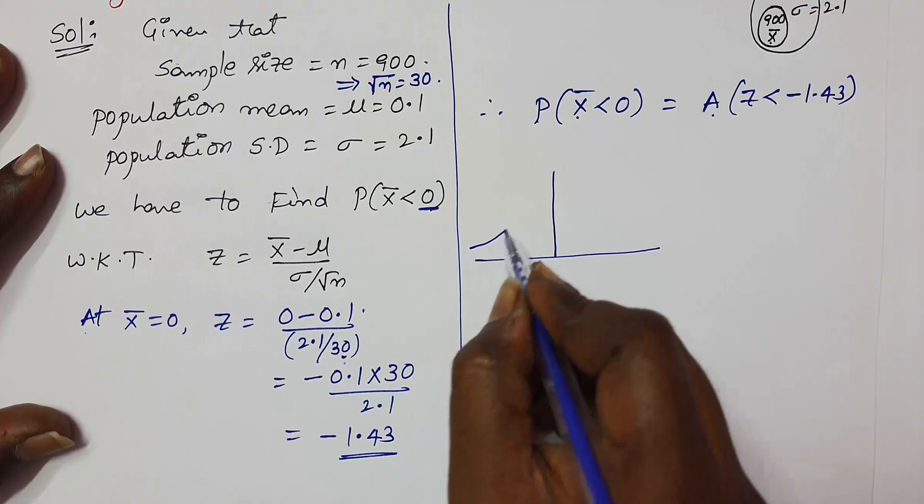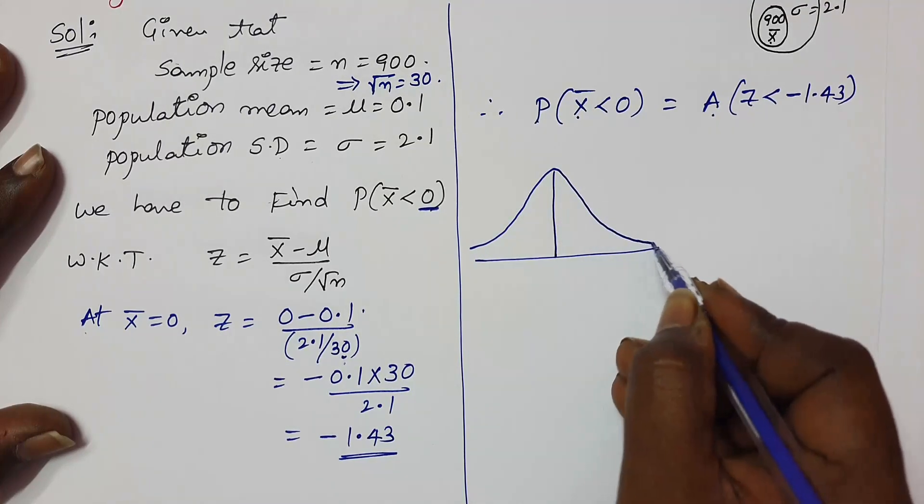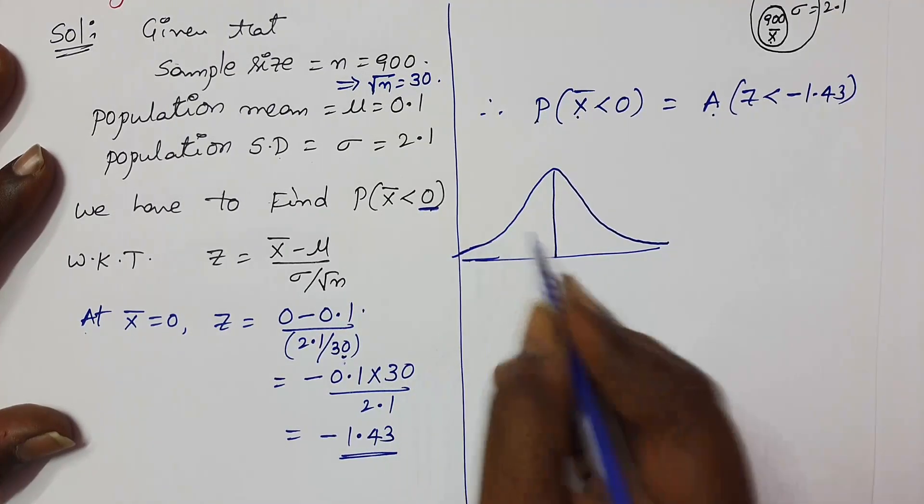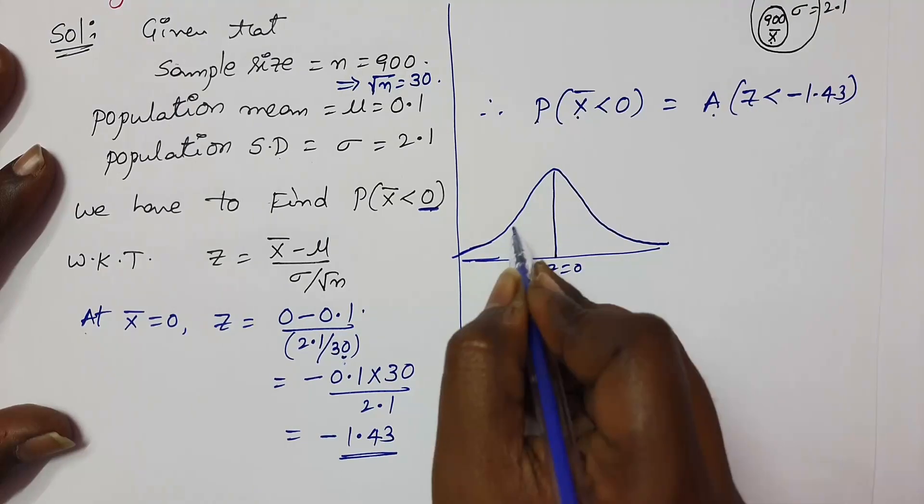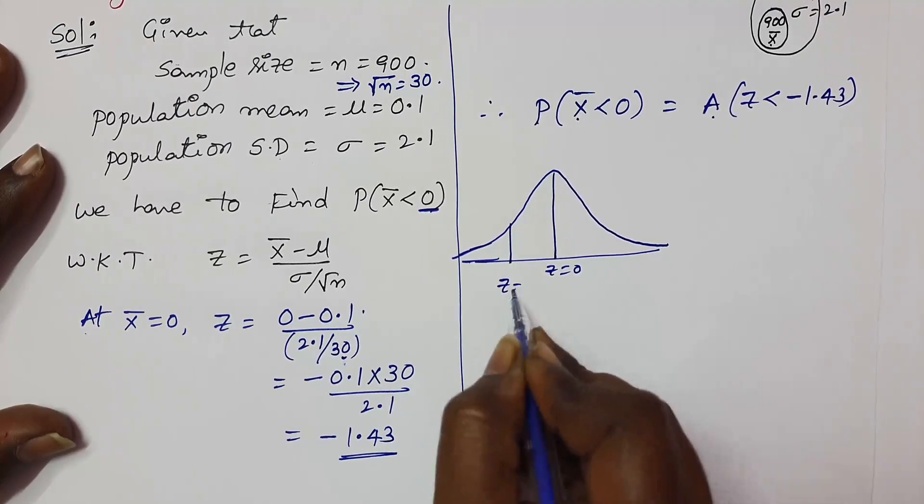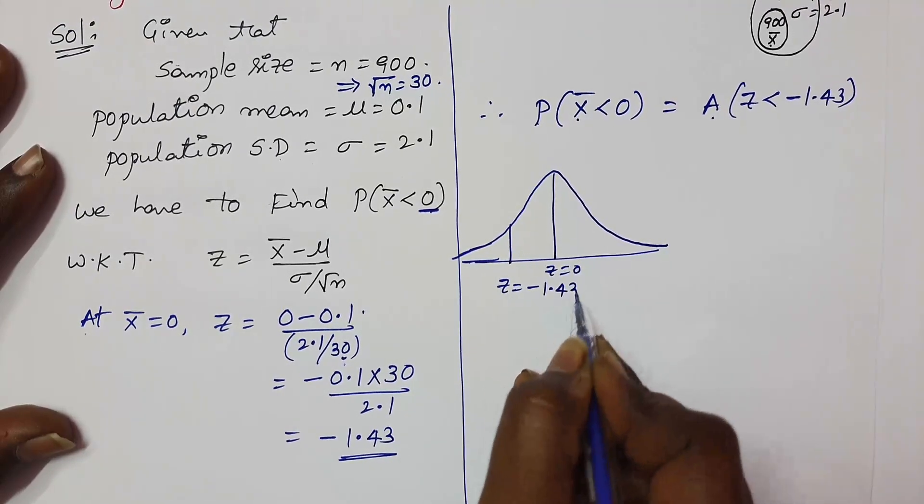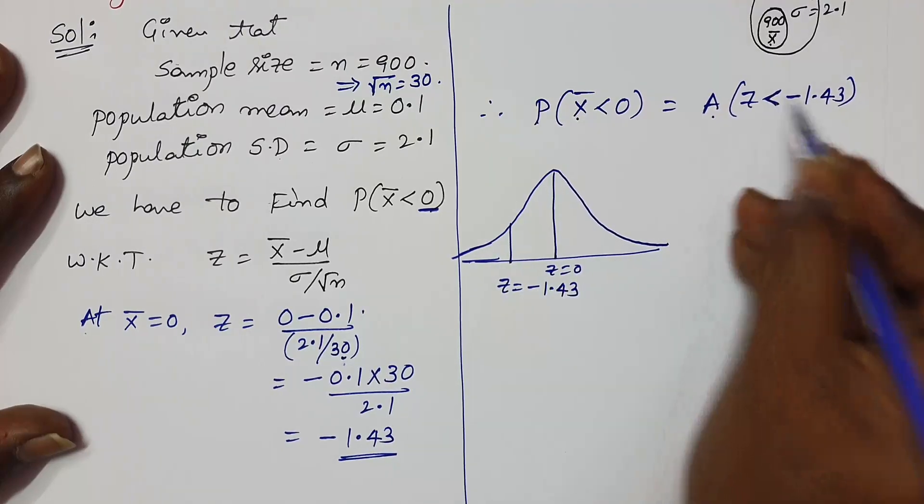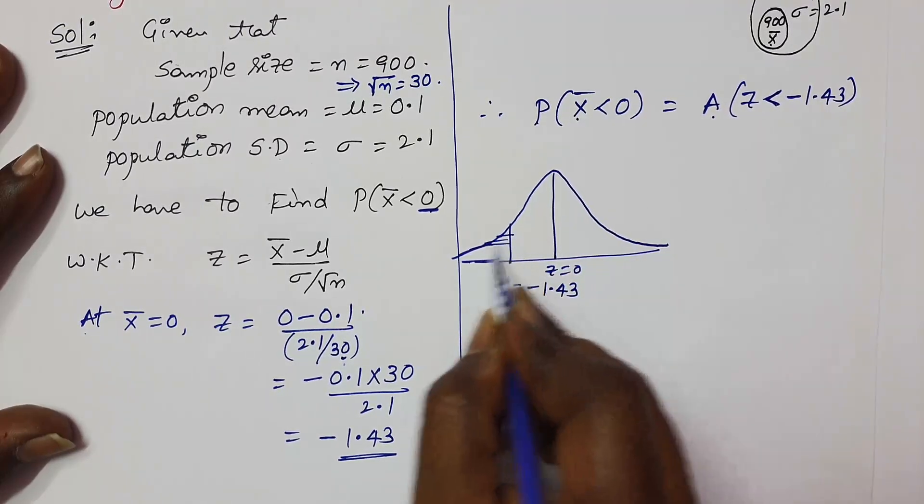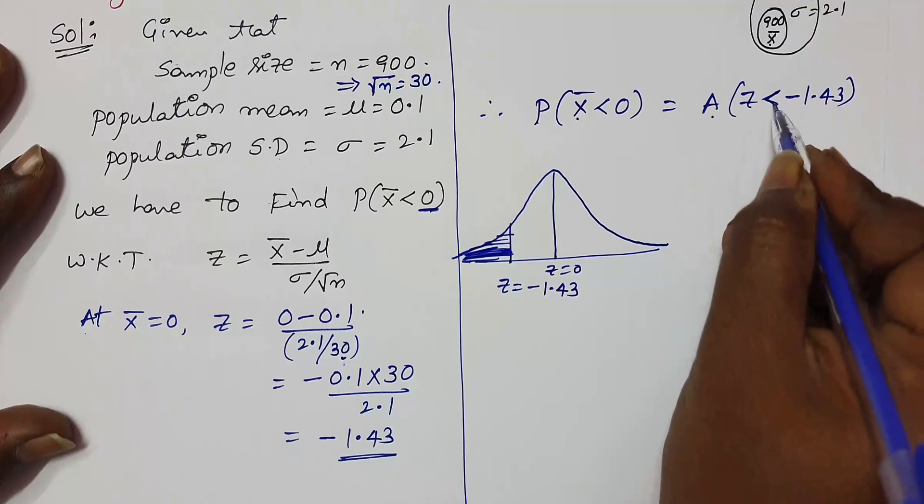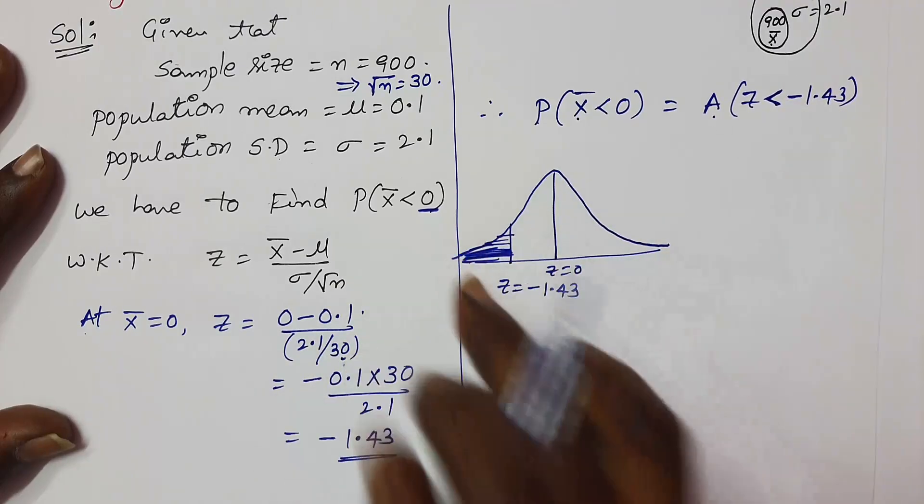So draw the normal curve. This is z equals 0. You may take here z equals minus 1.43. Since it has less than symbol, you should shade this left side area. If it is greater than, you can shade right side area instead of left side.